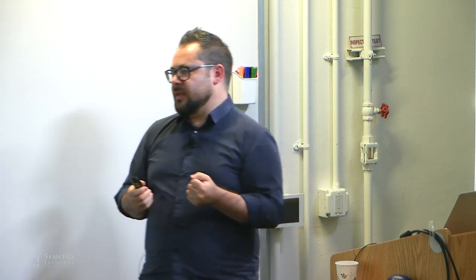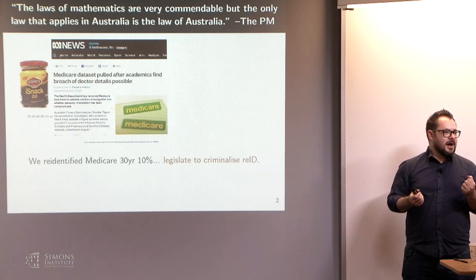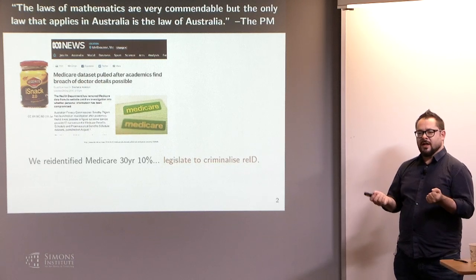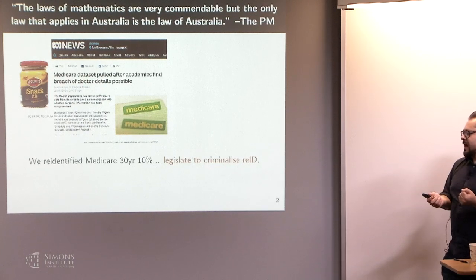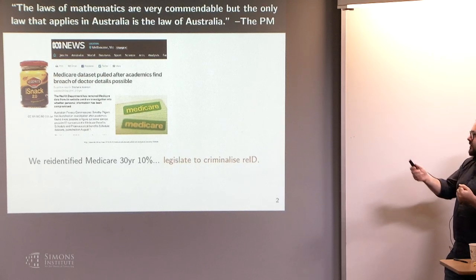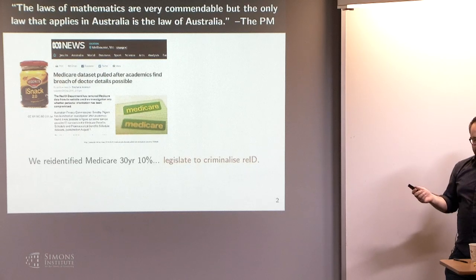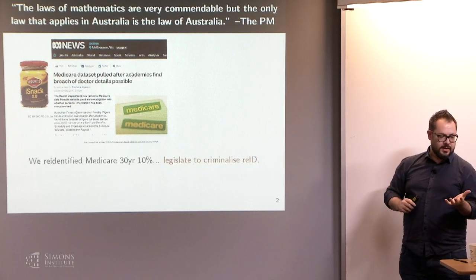This is something where sharing data, maybe you could do better. We heard yesterday about the US Census Bureau trying to share data with differential privacy. When we told them about this, they took the dataset down, and then they tabled legislation to criminalize re-identification — in the same day they announced the news. It didn't pass, but it hasn't gone away, so it's kind of an ongoing thing.